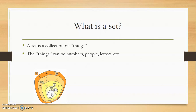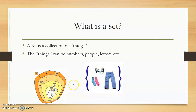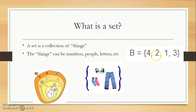We have whole numbers, integers, rational numbers, and so on and so forth. In this set we have three things: socks, shoes, and pants — those three things are composed within this set. In set B, we have four numbers — four, two, one, and three. These are elements or members of set B. The alphabet is a set as well, from A to Z — those are also elements or members of the alphabet.